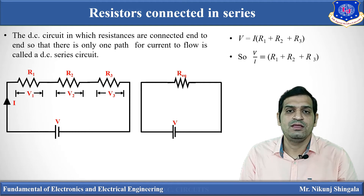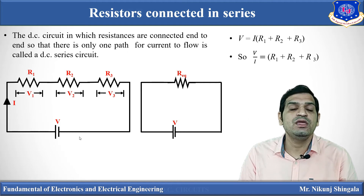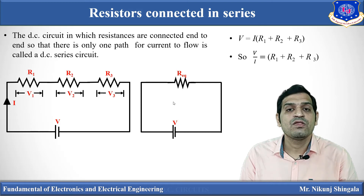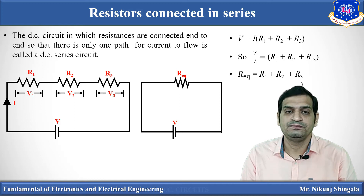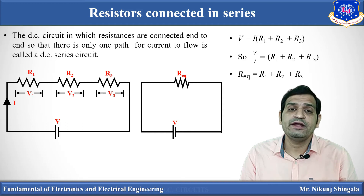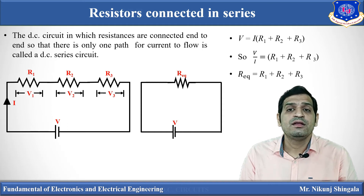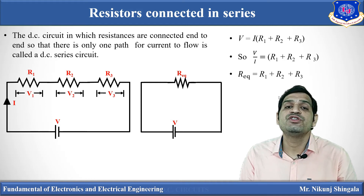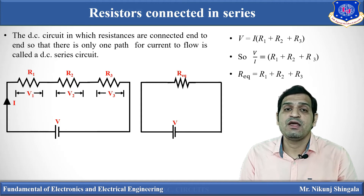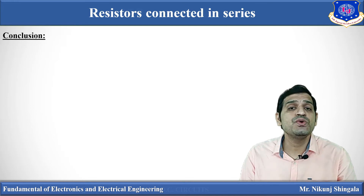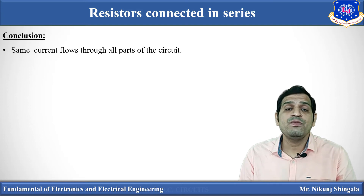Here you can see the equivalent circuit of the given series circuit, where all three resistors are replaced by an equivalent resistance R_equivalent. So R_equivalent equals R1 plus R2 plus R3. In general, for n resistors connected in series, R_equivalent equals R1 plus R2 plus R3 plus ... plus Rn. The equivalent resistance is simply the sum of the individual resistances.